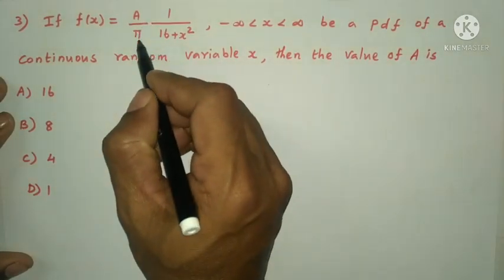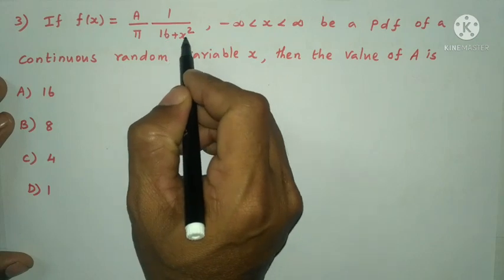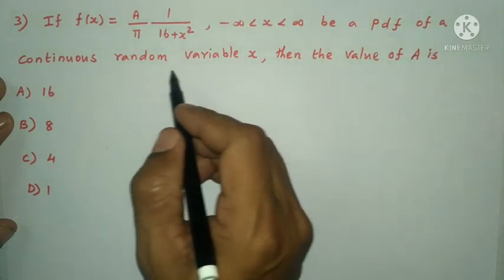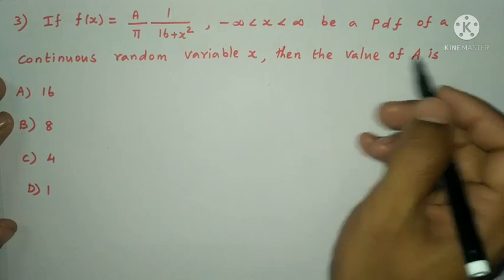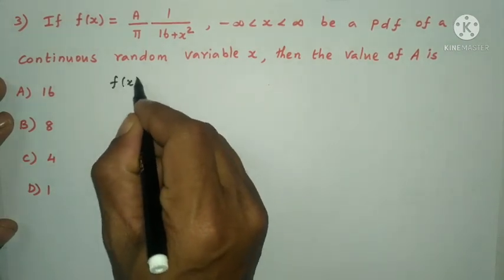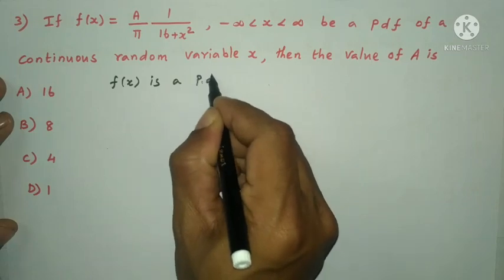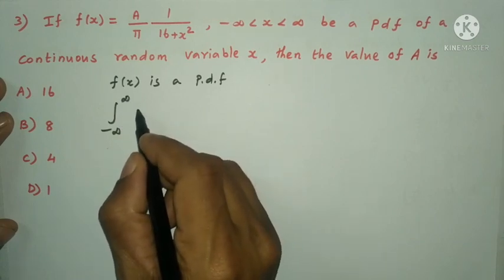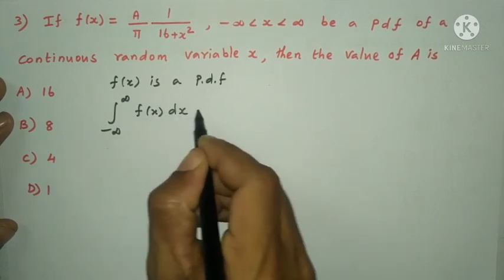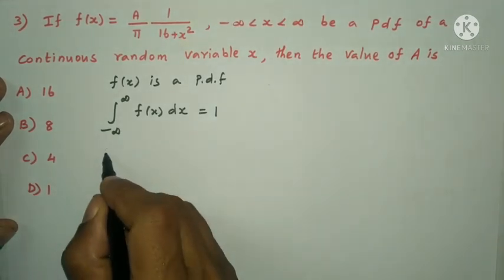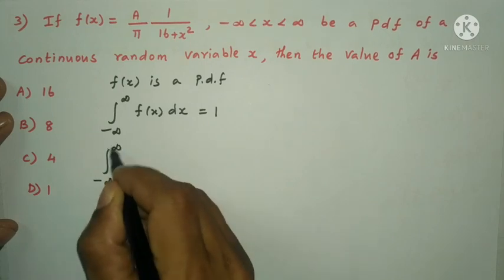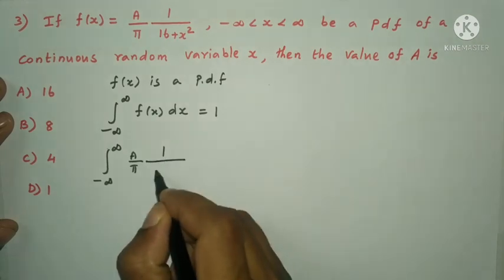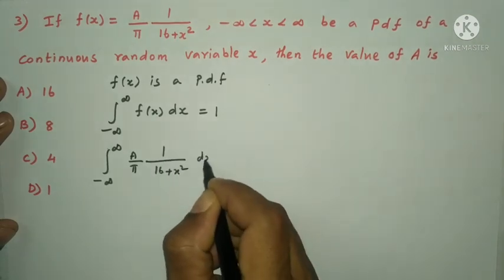Next question: if f(x) = (A/π)·(1/(16 + x²)) for minus infinity < x < infinity is a pdf of a continuous random variable X, then the value of A is. Since f(x) is a pdf, the integral from minus infinity to plus infinity of f(x) dx = 1. So (A/π)·integral of 1/(16 + x²) dx = 1.